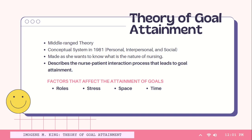Imogen M. King's middle-range theory of goal attainment was derived from her conceptual system in 1981, which has three interacting systems: personal, interpersonal, and social. The initiative to make the theory came from her wanting to know the nature of nursing, where she noted the way in which nurses, in their role, do with and for individuals that differentiates nursing from other health professionals. King also stated that her theory is different, for it describes the nurse-patient interaction process that leads to goal attainment. The nurse and the patient should be on the same page in communicating, setting goals, and achieving those goals. Factors that affect the attainment of goals include roles, stress, space, and time.